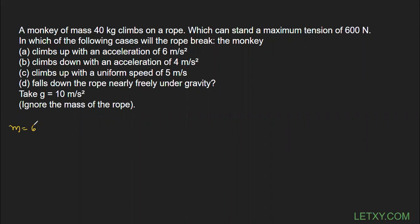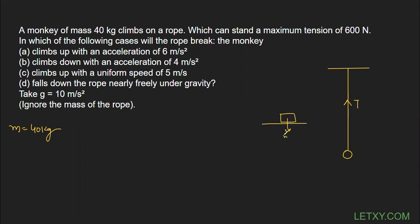Let's write down: m = 40 kg, which is the mass of the monkey. In the case of a string, tension is actually a force. Let me draw it so you can understand easily. This is a support from where a rope hangs, and if you suspend any mass with the rope, there will be tension. This tension is just like the normal reaction — weight acts downward, and tension acts upward.